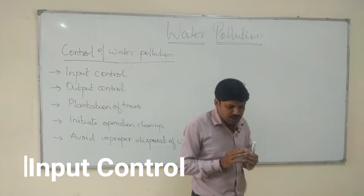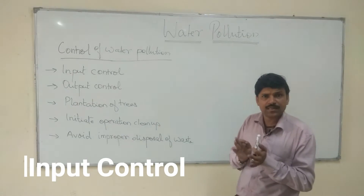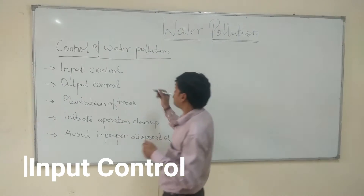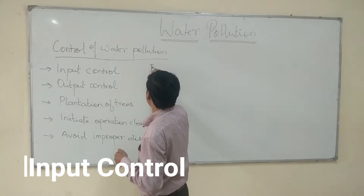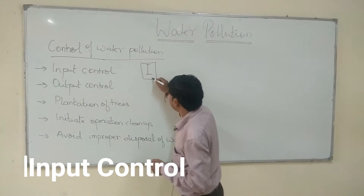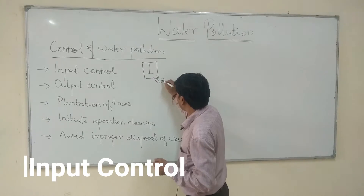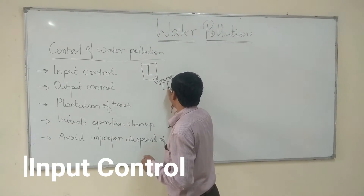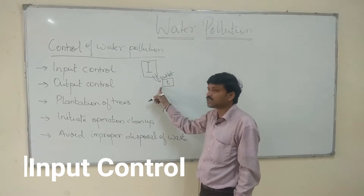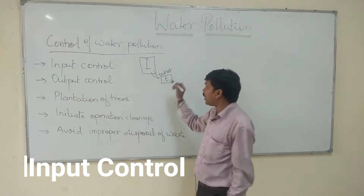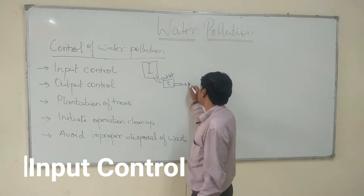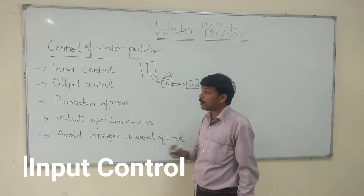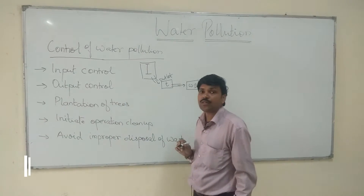Input control is a method in which the treatment of waste material occurs at the point of origin. For example, if this is an industry and this is an outlet of the industry, then the treatment of waste at this point is known as input control. After treatment, the water can be disposed of in a nearby water body.